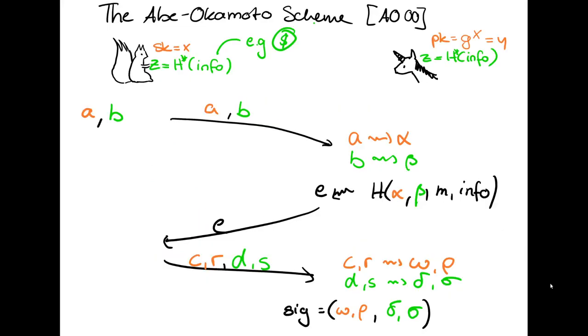The scheme we consider is the Abe Okamoto scheme. This is basically an OR proof of two blind Schnorr signatures. We have on the signer's side an OR proof that the signer either knows this discrete logarithm which is an exponent x or it knows the discrete logarithm of this hash of the tag info.